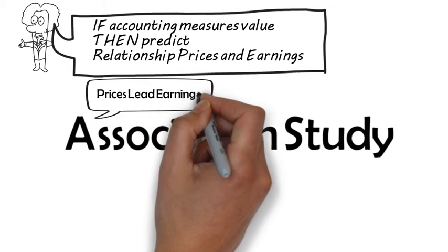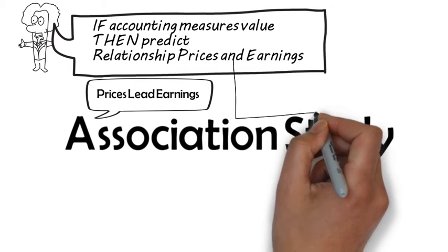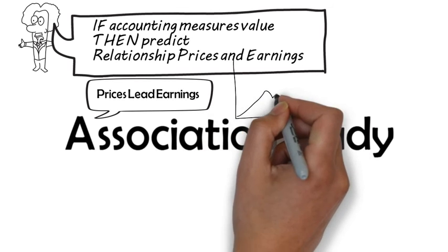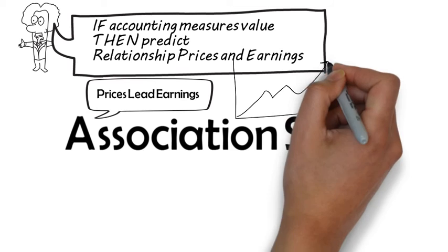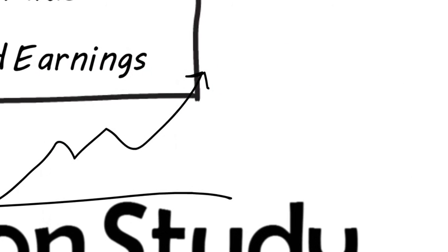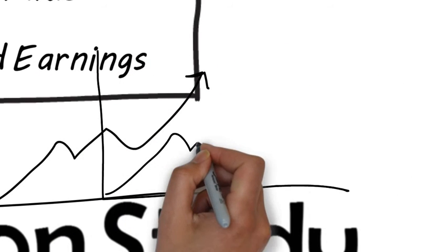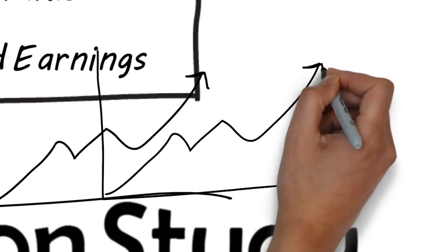A very interesting result of this research is that prices lead earnings. Share prices change first, and reported earnings move in the same direction, but later. Again, this challenges our theories about the information that's conveyed by accounting reports.